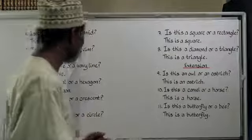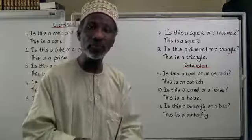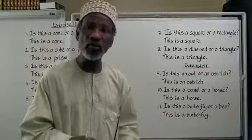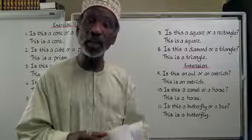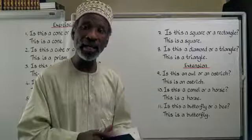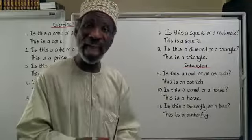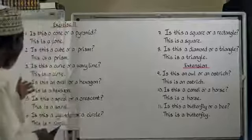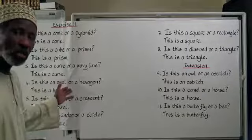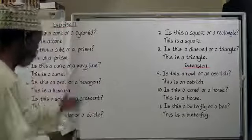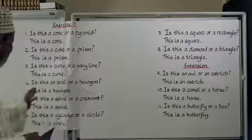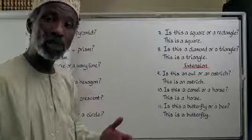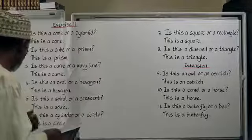Number 4: is this an oval or a hexagon? An oval is بَيْضَوِيٌّ and a hexagon is مُسَدَّسٌ. هَلْ هَذَا بَيْضَوِيٌّ أَمْ مُسَدَّسٌ. This is a hexagon — هَذَا مُسَدَّسٌ.